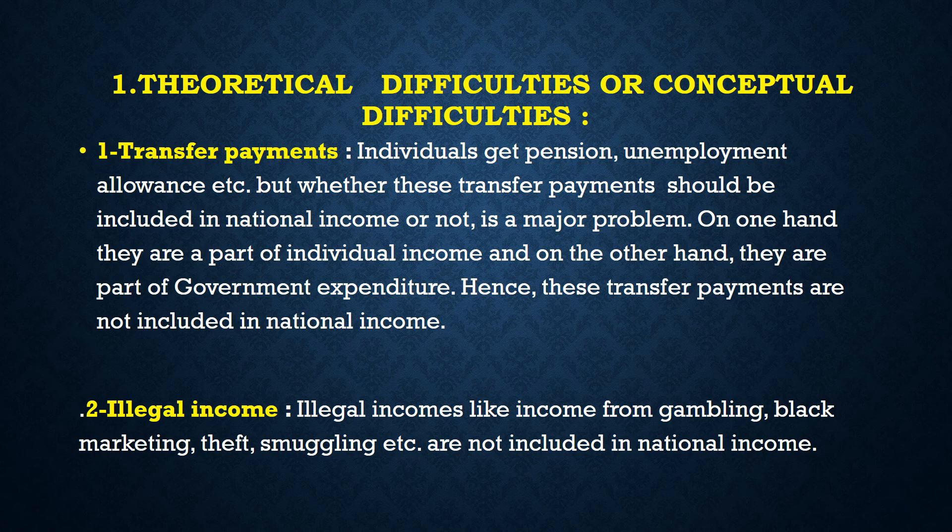Theoretical difficulty number 1: transfer payment. Remember, transfer payment is not included in the national income because it is a one-sided payment. Individuals get pension, unemployment allowances, etc. Whether these transfer payments should be included in the national income or not is a major problem. On one hand, they are part of individual income, but on the other hand, they are part of government expenditure. Hence, these transfer payments are not included in the national income.